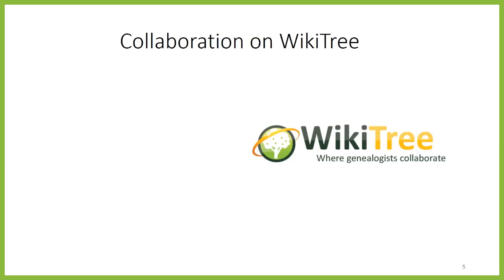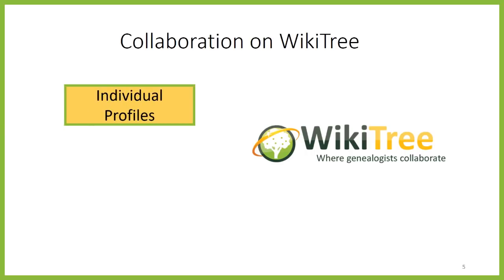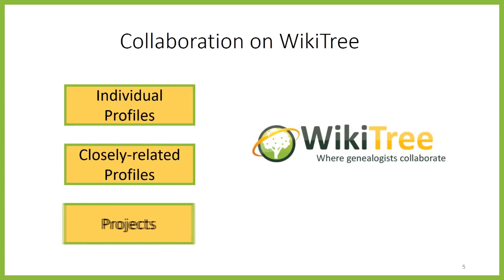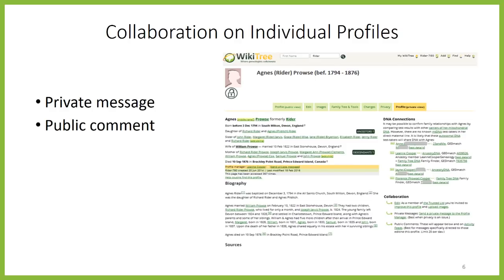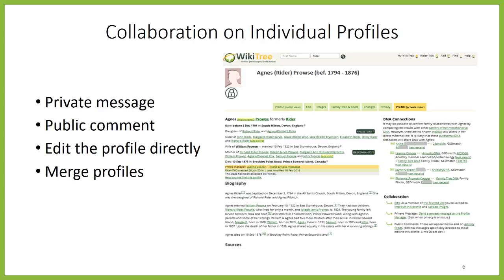Collaboration on WikiTree takes many forms. In this video I'm going to talk about three ways of collaborating: on individual profiles, on groups of closely related profiles, and on projects. Each person who ever lived should only have one profile on WikiTree, and everyone with information on that person works together on the same ancestor profile. There are many ways to collaborate on a profile: you can send a private message to the profile manager, put a public comment on the profile, edit the profile directly depending on its privacy setting, or if two or more profiles were created for the same person, you can merge them.